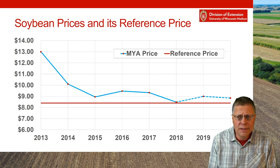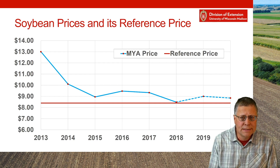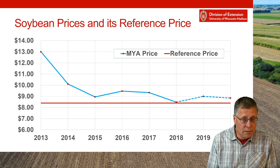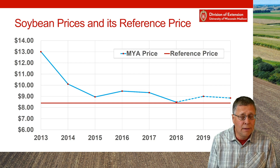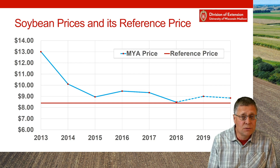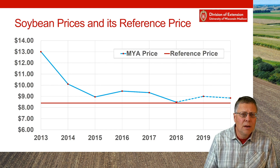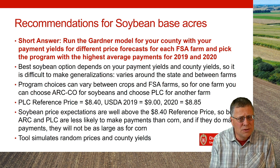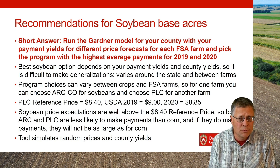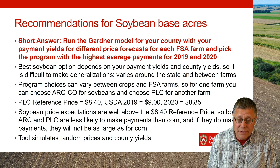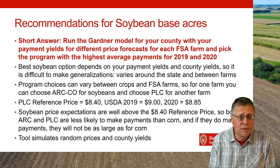Switching now to soybeans — the blue line shows historical marketing year average prices and the red line is the reference price of $8.40. Marketing year average prices for soybeans have been above that reference price of $8.40, and they are projected to stay there as well. There's still some uncertainty, and these are projections with a lot of variability. Running the payment tool, surprisingly there's no clear answer for Wisconsin. My recommendation is to run the tool for your county with your payment yields, using the different price forecasts available, for each of your FSA farms, and choose the option giving the highest average payments in 2019 and 2020.